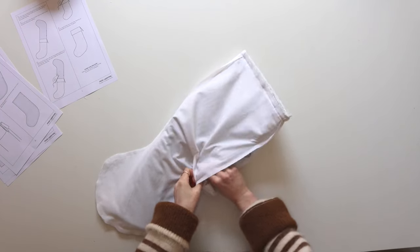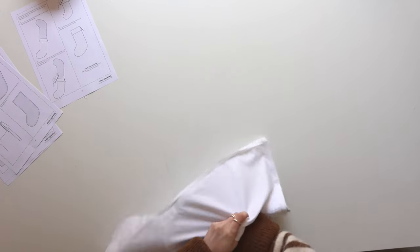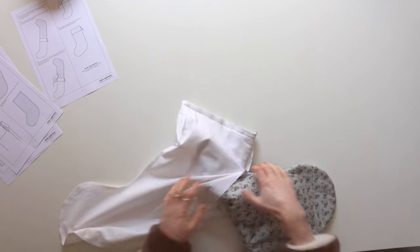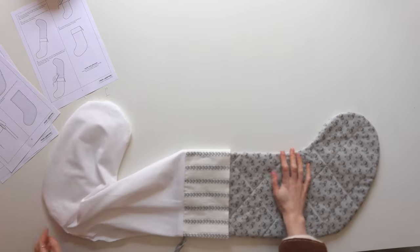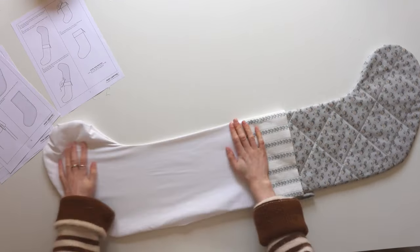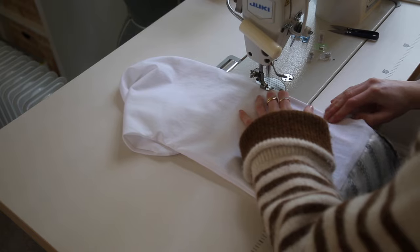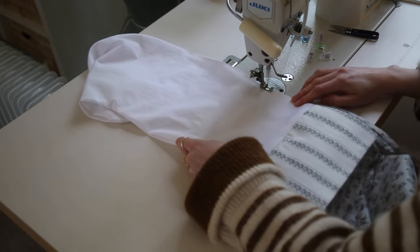Now find the hole in the lining and grab hold of the outer stocking and pull it through. This can be a bit fiddly so just be patient. Once it's looking like this you can then stitch the lining hole closed. You could do this by hand or I just top stitch it flat.